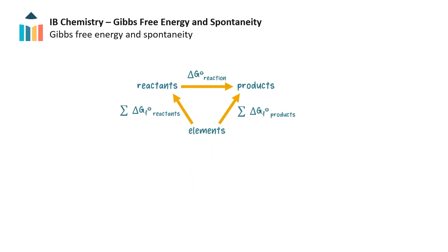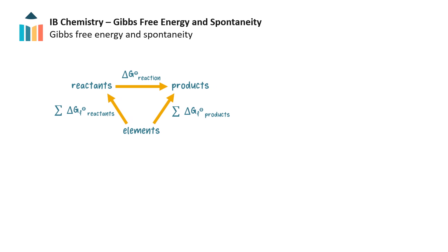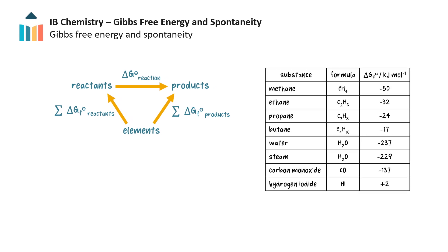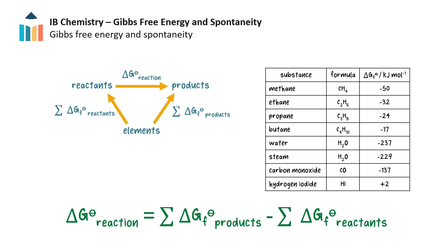The standard change in Gibbs free energy for a reaction can also be calculated using standard change in Gibbs free energy of formation values and a Hess cycle, in the same way as reaction enthalpy can be calculated from enthalpies of formation. Standard Gibbs free energy of formation values for some compounds can be found in tables, and the following equation can be used to calculate standard delta G. However, this equation can only be used for reactions happening under standard conditions.